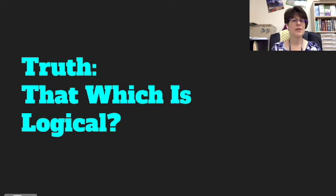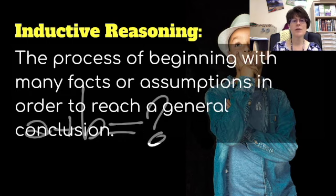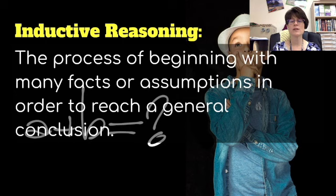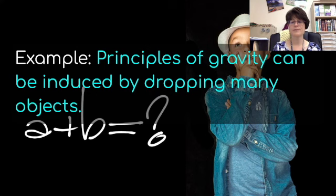Is truth that which is logical? Logical reasoning is the process of arriving at a conclusion through a series of ordered steps. In fact, one of the reasons you study science and math is to teach you how to think logically. One type of logical reasoning is inductive reasoning — the process of beginning with many facts or assumptions in order to reach a general conclusion. We do this a lot in science. An example is that the principles of gravity can be induced by dropping many objects. We drop a lot of things, observe that they fall, and come up with the law of gravity to say that when you drop things, they're going to fall to the ground. That's pretty logical.